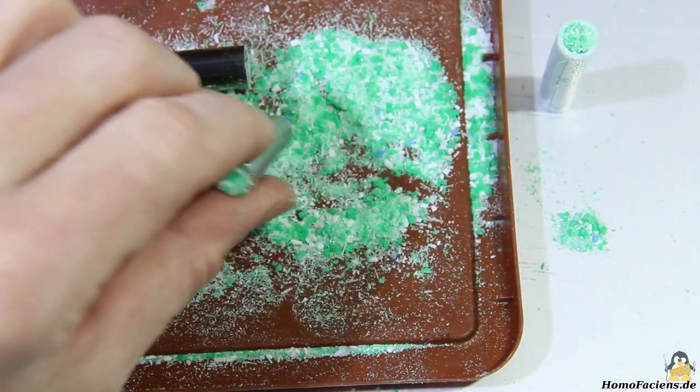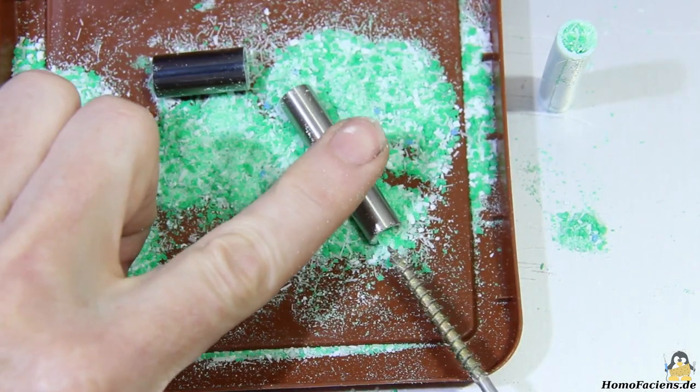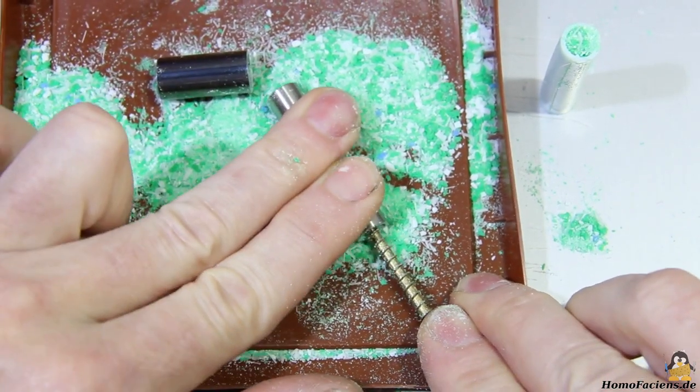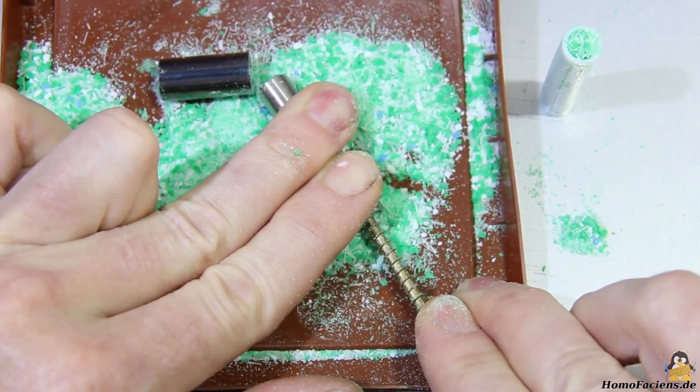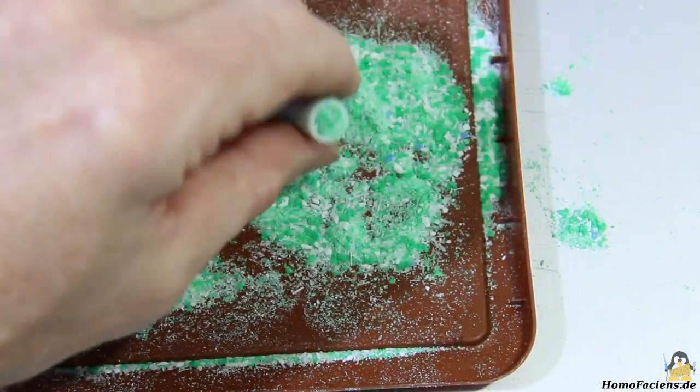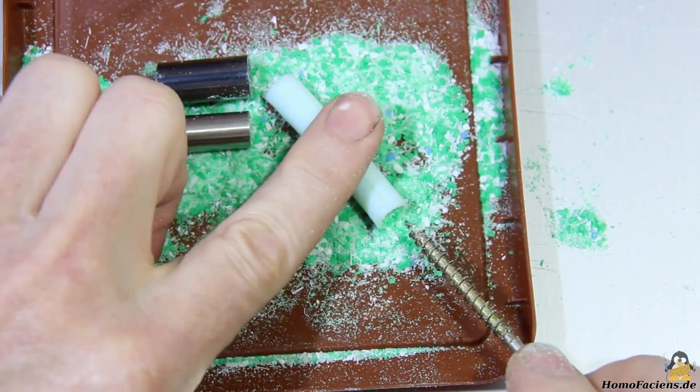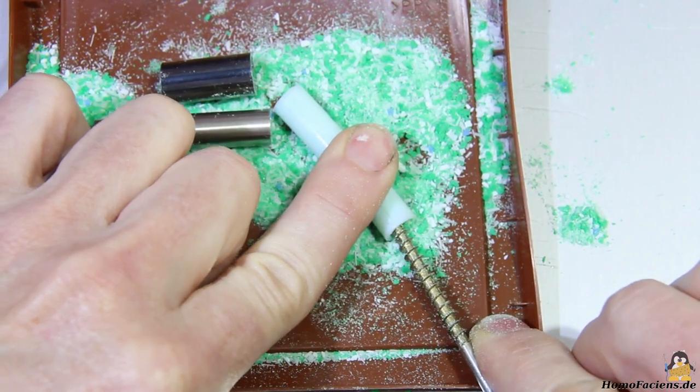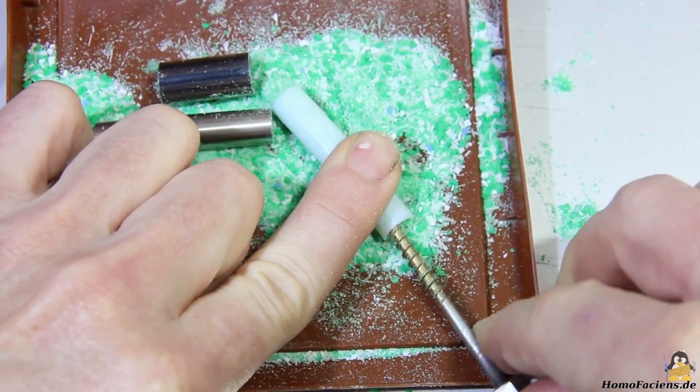The same can no longer be achieved with the longer and thinner tube, even with great effort. In the case of the Teflon tube with the same dimensions, on the other hand, it is possible to push the granulate through again, though a little effort is required.